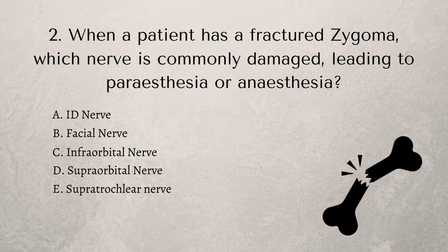Number two: when a patient has fractured their zygoma, which nerve is commonly damaged leading to paraesthesia or anaesthesia? Is it the ID nerve, the facial nerve, the infraorbital nerve, the supraorbital nerve, or the supratrochlear nerve? This is a really, really good topic and it comes up quite a lot — this topic of trauma.